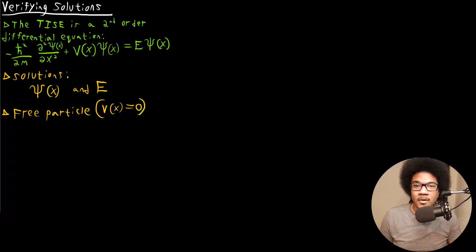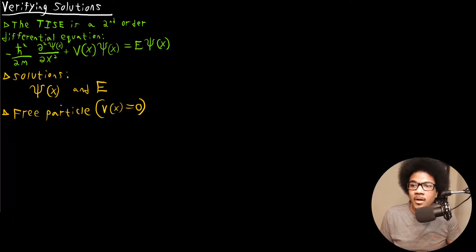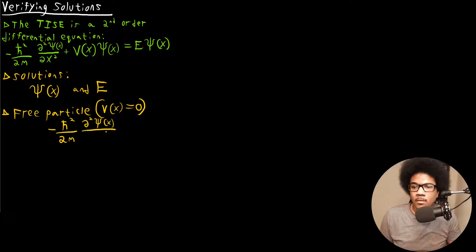Think about a free particle moving in space completely unencumbered by any potential. This simplifies our Schrödinger's equation so that we just have the kinetic energy term: negative h-bar squared over 2m times d²ψ/dx² is equal to E·ψ(x).